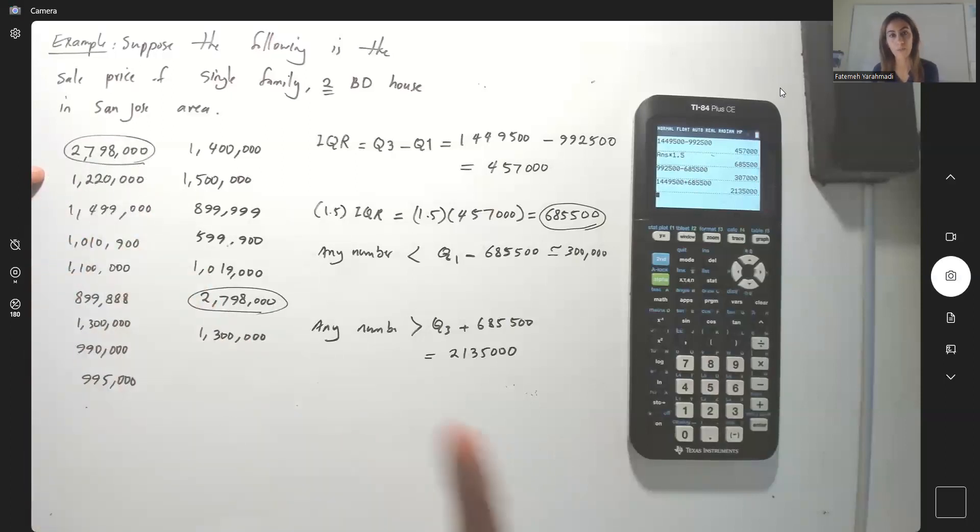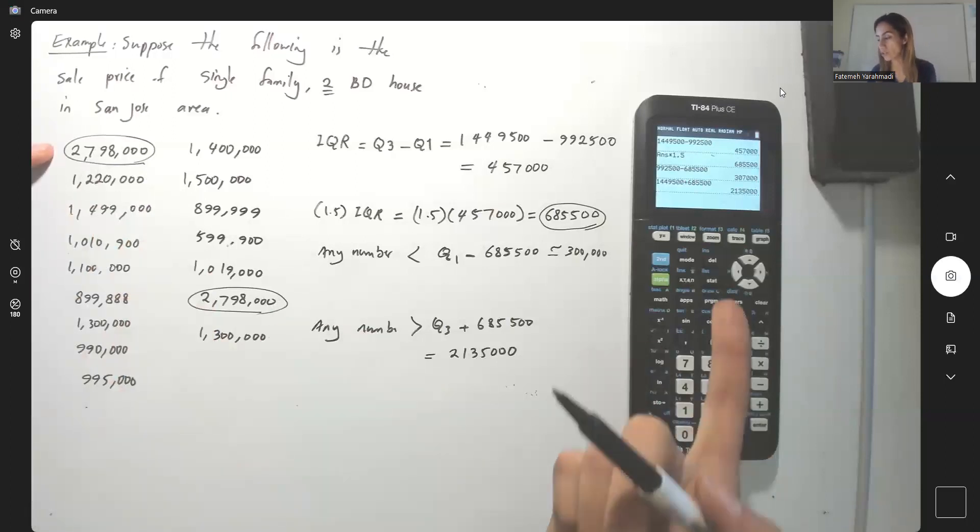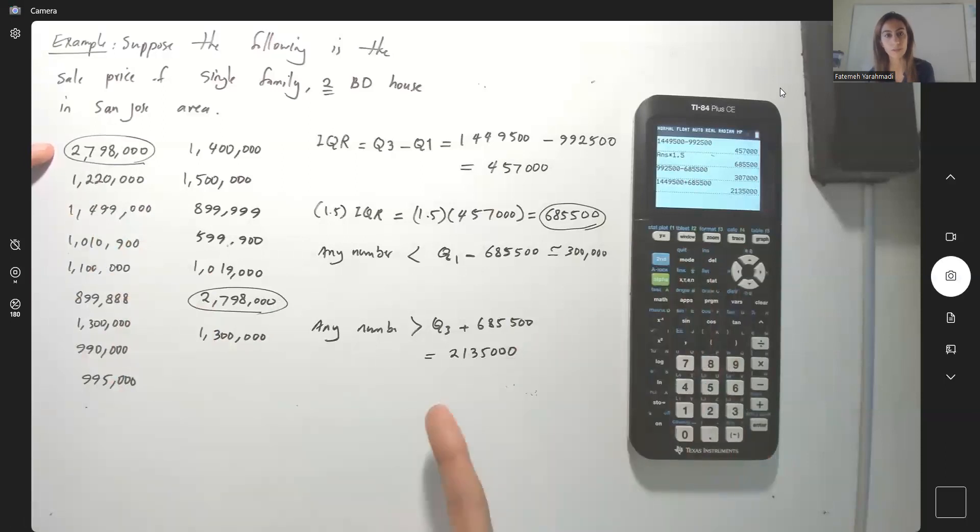So as your box plot verifies that the outlier is this number, the algebra behind the work also verifies that you have an outlier which is 2,798,000 dollars. The algebra and also we use our box plot to show you how to calculate the outlier in your data.